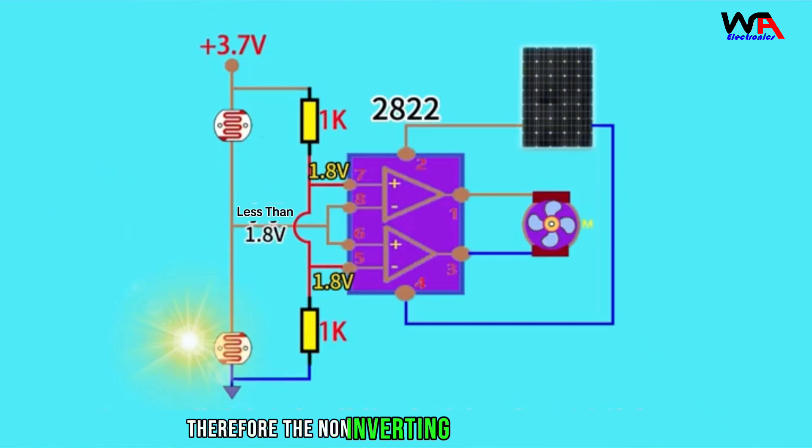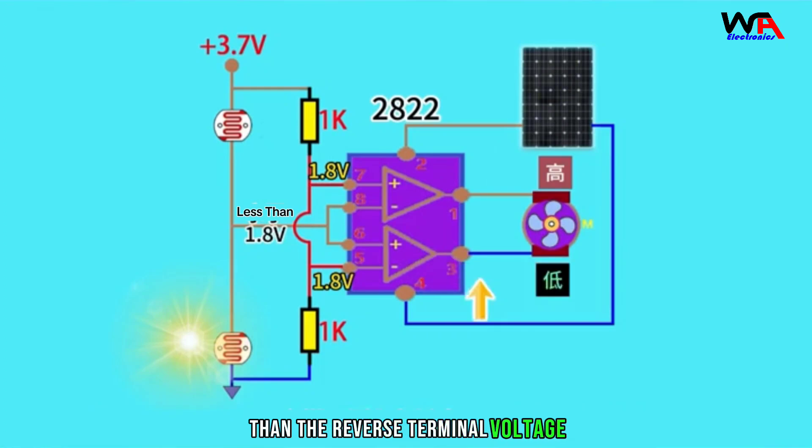Therefore, the non-inverting terminal voltage of the upper op-amp in the 2822 chip is greater than the reverse terminal voltage. In this way, pin 1 outputs high level. In the 2822 chip, the non-inverting terminal voltage of the lower op-amp is smaller than the reverse terminal voltage. In this way, pin 3 outputs low level.